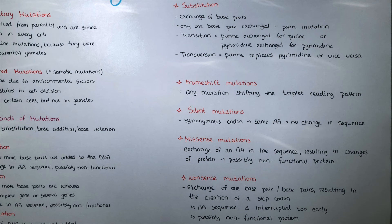Now we talk about the different kinds of mutations on a slightly different scale, because mutations lead to different kinds of problems within the genes — or maybe not. In the case of a silent mutation, the mutation leads to the coding of a synonymous triplet, so the same amino acid will be put in the sequence and there is no change. The body doesn't even notice that something happened.